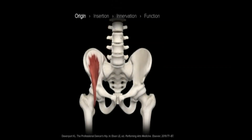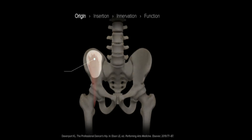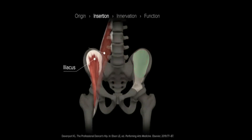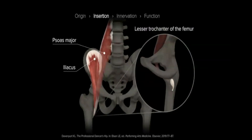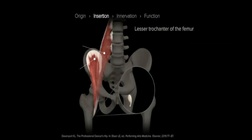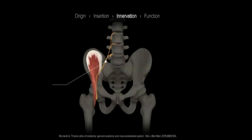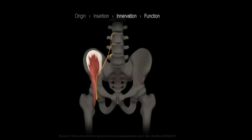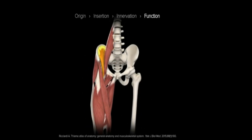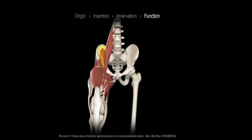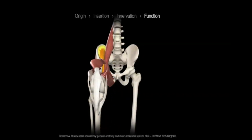Triangular in shape, the large iliacus muscle originates along the flat surface of the ilium on the superior two-thirds of the iliac fossa. The muscle then crosses over the hip joint and inserts into the psoas major tendon before terminating on the lesser trochanter of the femur. It is innervated by the femoral nerve, branching from the L2 to L4 nerve roots. The iliacus contributes to flexion of the trunk through the hip joint, as well as external rotation of the femur.